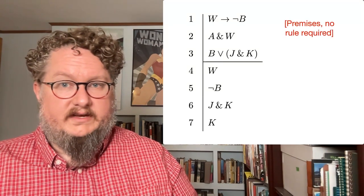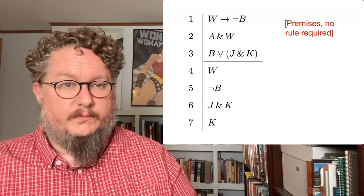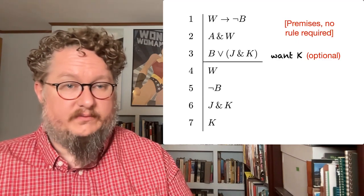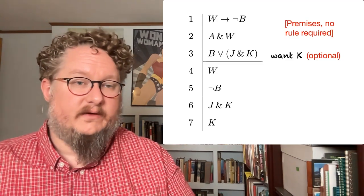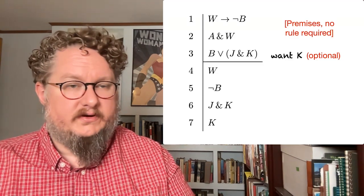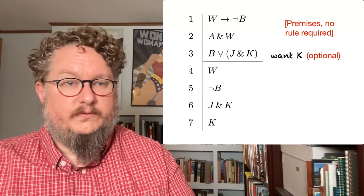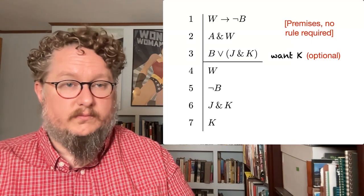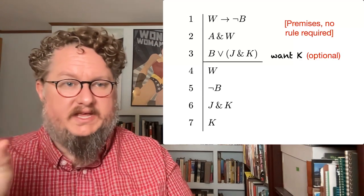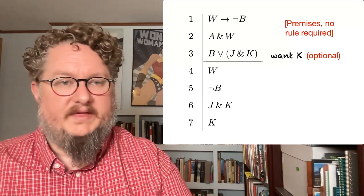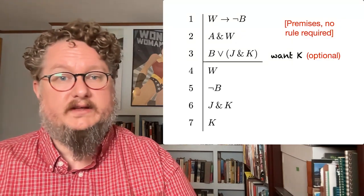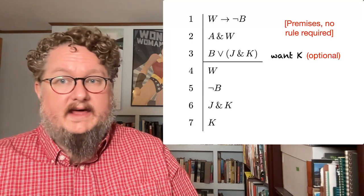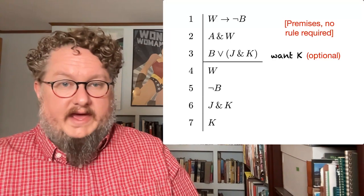Above the line, the premises need no rule — there's no rule required. Often we write at the end of all the premises that we want K, where K is what we're trying to prove, followed by the sentence we're trying to prove. That's actually optional in this system. When we're doing proofs in Carnap, however, after each premise we're going to use a rule called PR just to indicate it's a premise. When writing proofs by hand, you wouldn't need to do that.